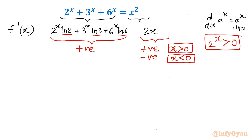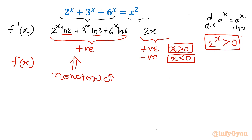Overall conclusion: since f'(x) on the left is always positive, the left-hand side function is monotonically increasing always. For the right-hand side, when x is negative it is a monotonically decreasing function, and when x is positive the parabolic function is monotonically increasing.